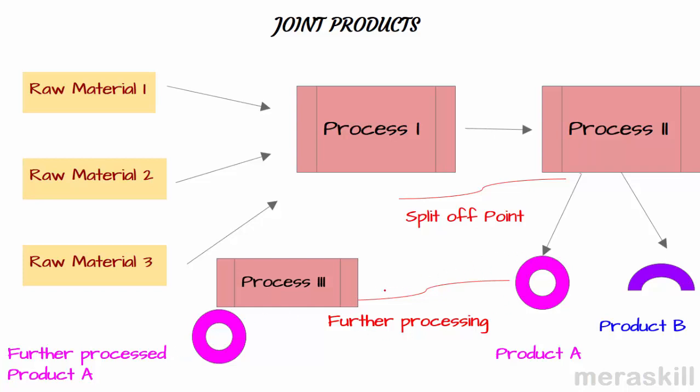this cost which is there, this is only for product A. This I know is only product A's cost and this will be apportioned only to product A. There is actually no apportionment as such. We know it is clear that it belongs to product A.